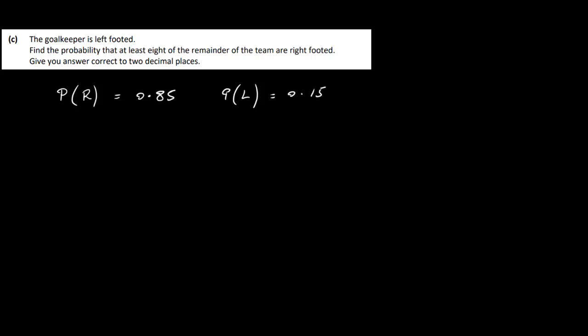For part c, the goalkeeper is left-footed — find the probability that at least eight of the remainder of the team are right-footed, correct to two decimal places. Since we're ignoring the goalkeeper, we're dealing with 10 players. The probability of being right-footed is 0.85 and left-footed is 0.15. We take right-footed as success this time. At least eight means P(8) plus P(9) plus P(10).